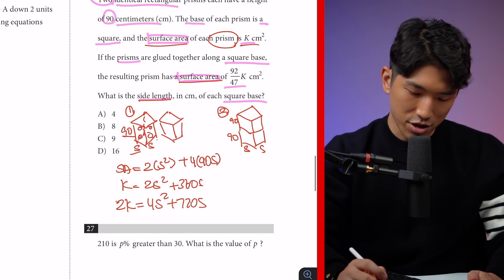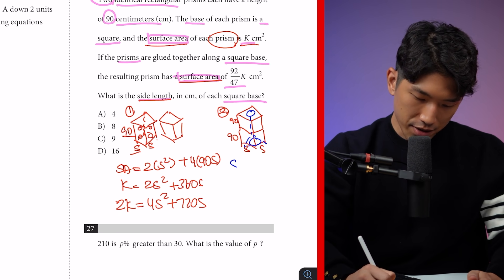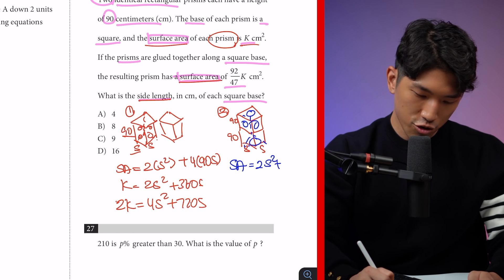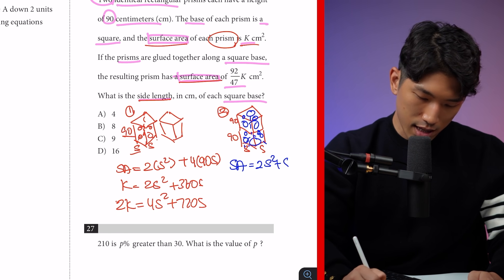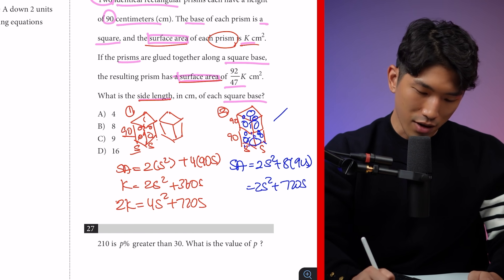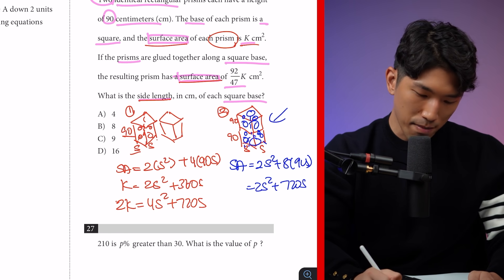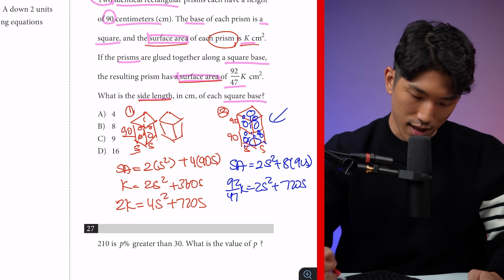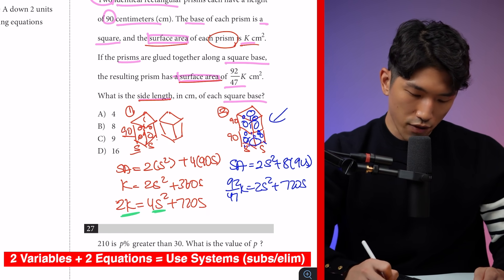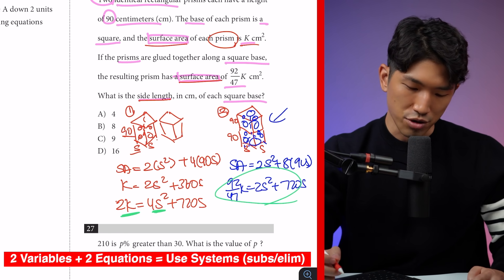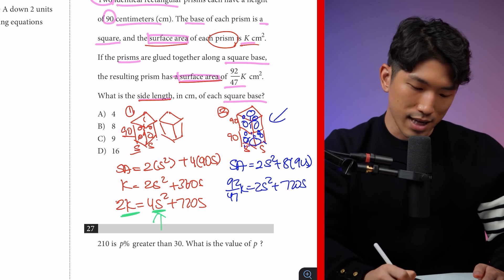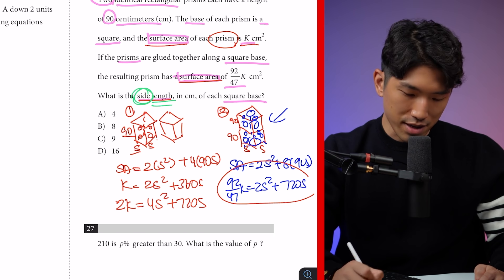Now for the stacked configuration: it still has a top and bottom base, so 2S², plus all the side faces. Counting the sides: there are 8 faces total, each 90·S, giving 8·90·S = 720S. So the stacked prism's surface area is 2S² + 720S, and we know this equals 92/47·K.